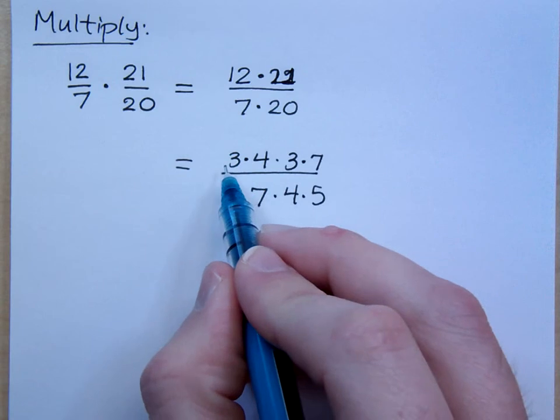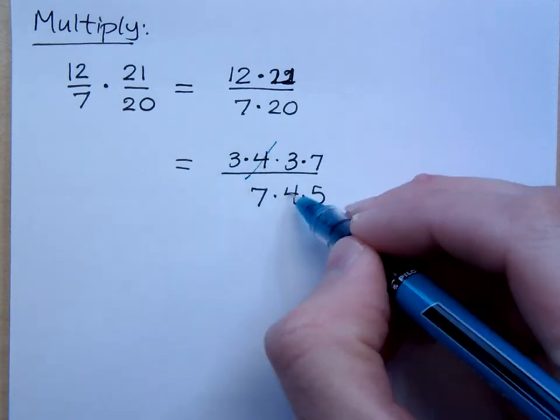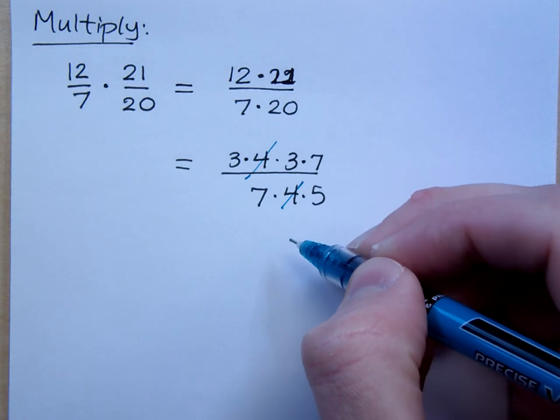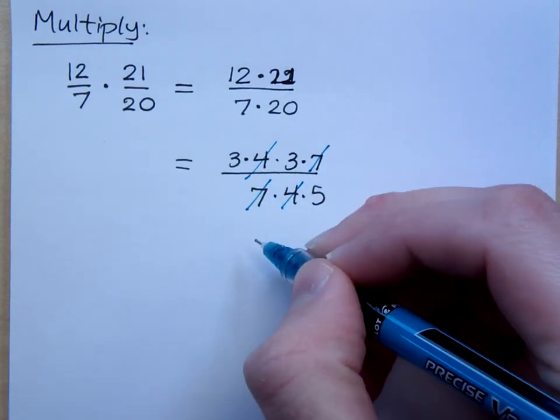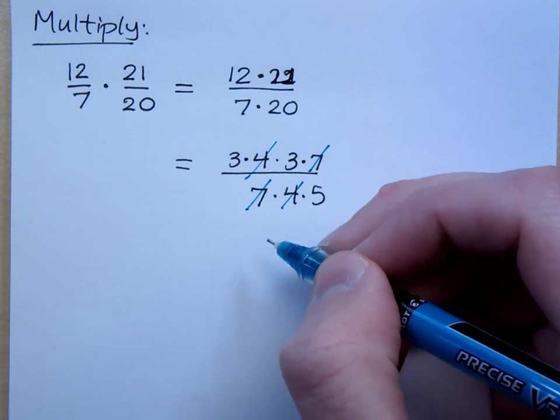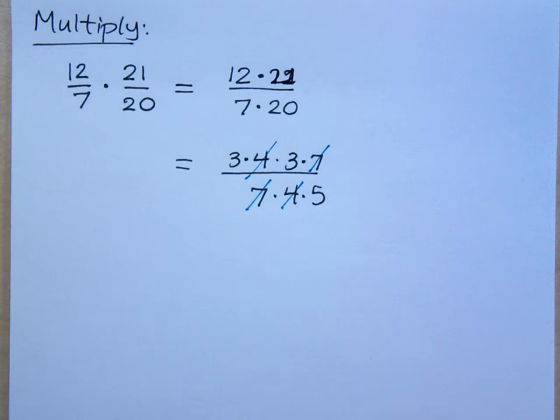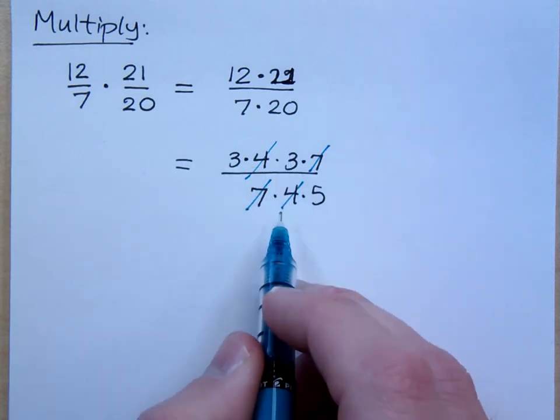I can't reduce the 3s because these are multiplied together. That would actually be 9. But the 4s can reduce because 4 divided by 4 is 1. You also have 7 over 7 because 7 divided by 7 is 1. Can you ever cancel side to side? No, you can never cancel side to side. It has to be one at the top and one at the bottom.